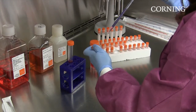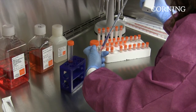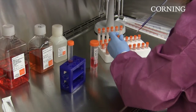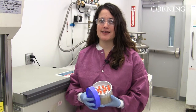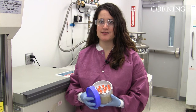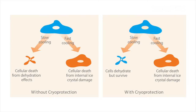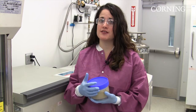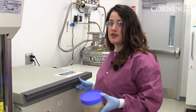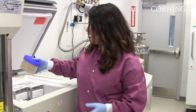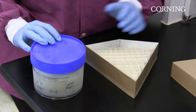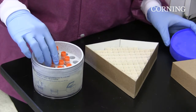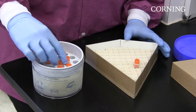Once the cells are aliquoted, I can begin the freezing process. Unlike thawing cells, the freezing process is a slow, controlled process. You want to give the cryoprotectant time to remove water from the cells, which reduces their chances of being damaged by the formation of ice crystals. I will be using a specialized container that controls the rate of freeze to 1 degree Celsius per minute. Once the cryogenic vials are in the container, they can be placed in a minus 80 freezer overnight. After 24 hours, the cryogenic vials are ready to be transferred to a liquid nitrogen freezer for long-term storage.